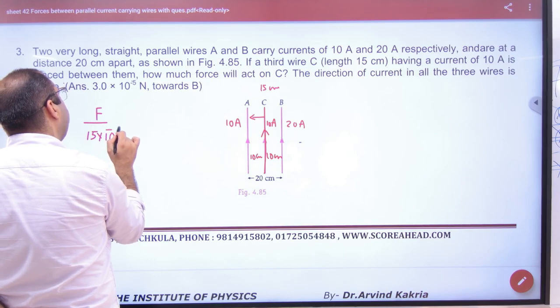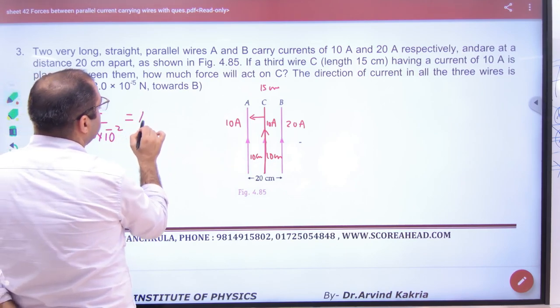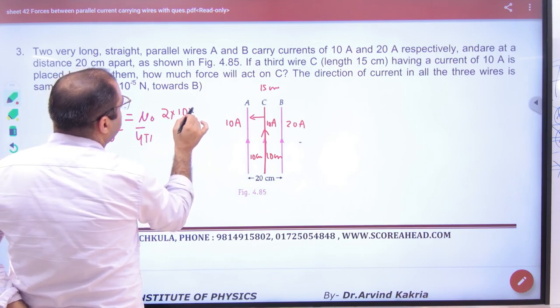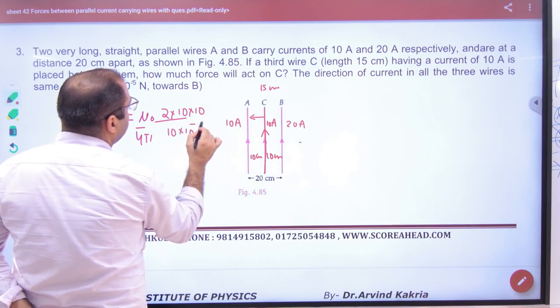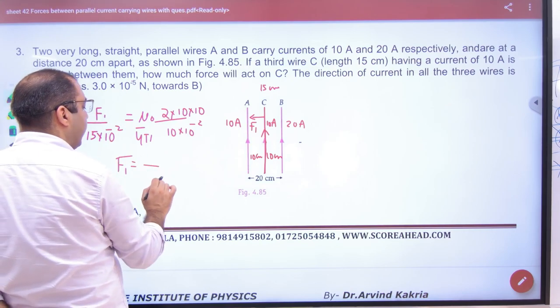So force per unit length, 15 centimeter. What will be force? Mu naught by 4 pi, 2 into 10 into 10 divided by 10 centimeter. Convert in meter. So you will have force F1. This F1 is coming towards left.